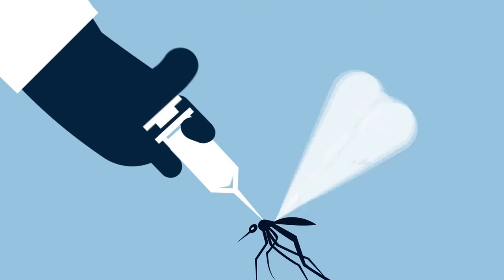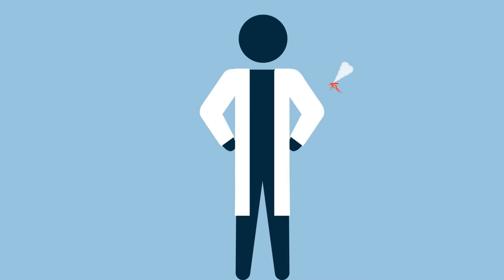But how do we get the inhibitor into insects? Scientists have tried lots of methods like injecting and feeding, which can work in the lab, but it's difficult and expensive because we need to make lots of inhibitor. This strategy won't work in the wild.